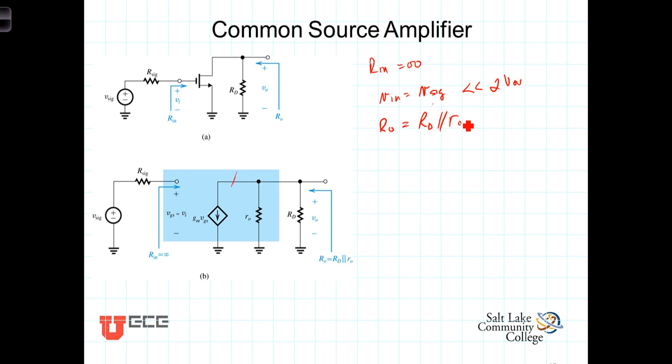We can determine the open circuit gain, AV0, which is defined as Vout over Vn, with no load resistance connected.